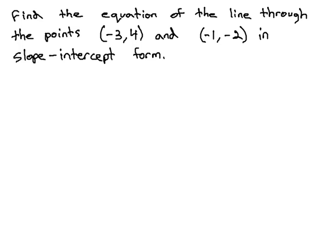In this video, we're going to find the equation of a line through two points in slope-intercept form. In this problem, the points we are given are (-3, 4) and (-1, -2). Ideally, the problem wants the answer in slope-intercept form, which is y equals mx plus b.